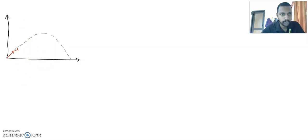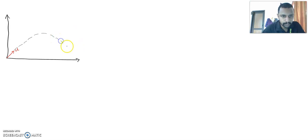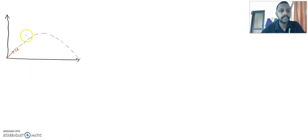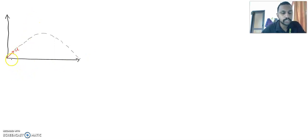Therefore, the trajectory of this projectile will be in the shape of a parabola and it will fall to the ground like this. Then we have to understand the motion of this projectile.